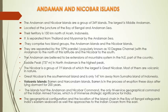Bharat ke andar do bade dweep samuho paaye jaate hain. Unme sabse pahela hai Andaman and Nicobar Island. Yeh 349 dweepon se milkar bana hai. Iske andar sabse bada hai Middle Andaman. Yeh Bangal ki khadi aur Andaman Sea ke beech mein paaya jaata hai, aur inki territory jo hai, 150 km Indonesia se door hai. Thailand aur Myanmar — in dono ko Andaman Sea separate karta hai.